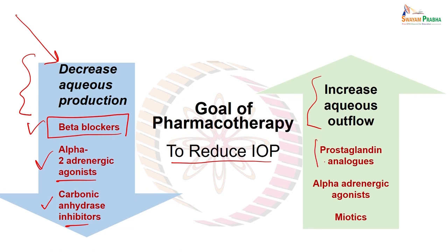On the other hand, drugs which can increase the outflow are called miotics — they cause the pupil to constrict. When the pupil constricts, the canal of Schlemm will open, and that is why cholinergic drugs, which are miotics, are useful. You will recall that mydriatic agents like atropine, antihistamines, anticholinergics, and antidepressants block the canal of Schlemm and therefore precipitate glaucoma.